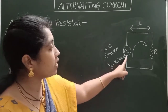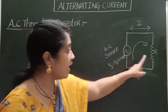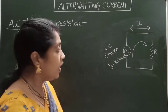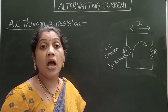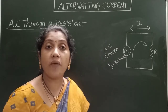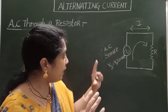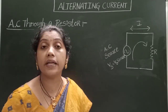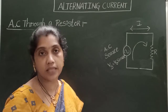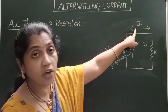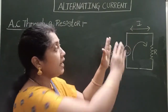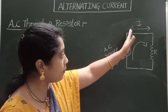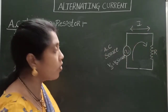In this circuit, an alternating source is provided and a resistor of resistance R is connected to the alternating source. When the alternating source is provided, periodically the direction of the alternating EMF and at the same time the alternating current changes in the circuit. That's why the direction of the current is represented on both sides — either positive to negative or from negative to positive.